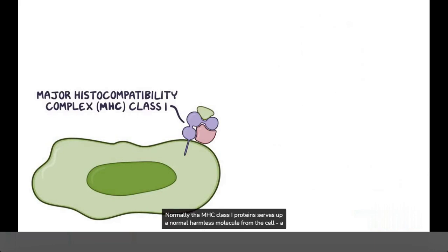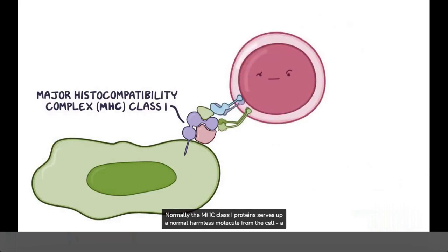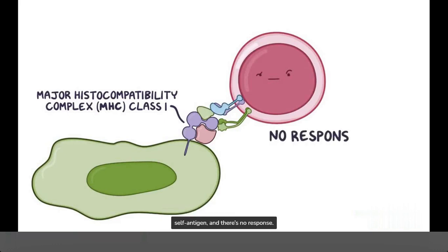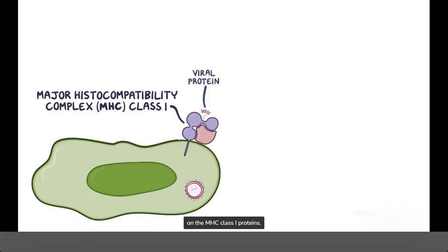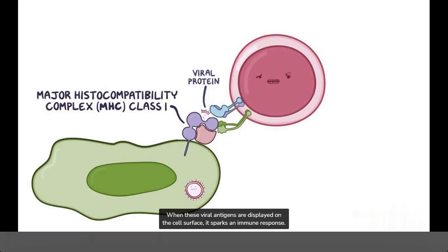Normally, the MHC class 1 protein serves up a normal, harmless molecule from the cell — a self-antigen — and there's no response. But if a cell is invaded by a pathogen, like a virus, then viral proteins are served upon the MHC class 1 proteins. When these viral antigens are displayed on the cell surface, it sparks an immune response.